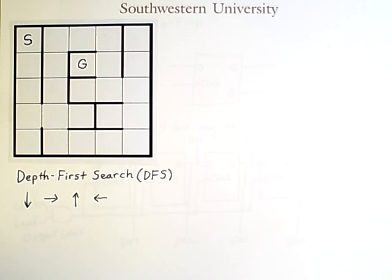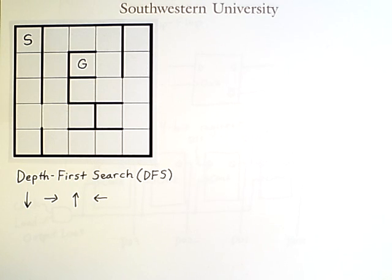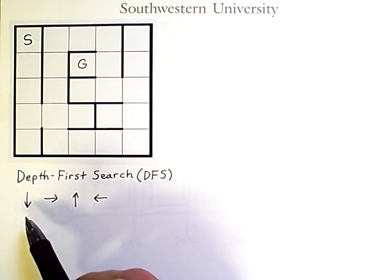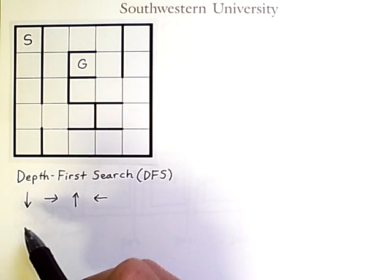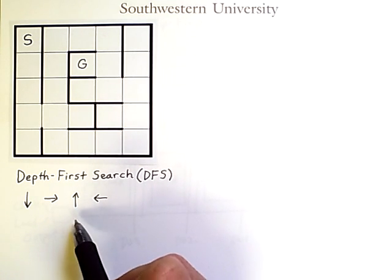The way depth-first search works is that it looks at the available successor states, picks one, looks at the successor states from that state, picks one of those, and continues this process until it either finds the goal or hits a dead end. If a dead end is hit, it backs up to the last point in the search where it had options it didn't explore. To demonstrate this, we'll assume we always check successor states in the same order: down first, then right, then up, then left.